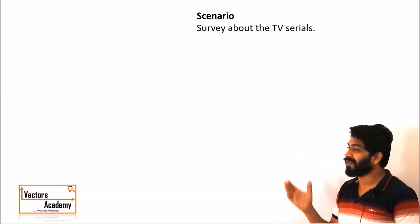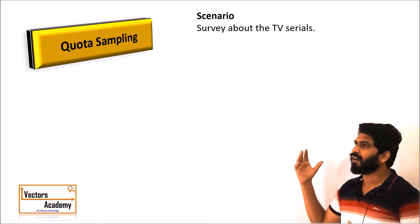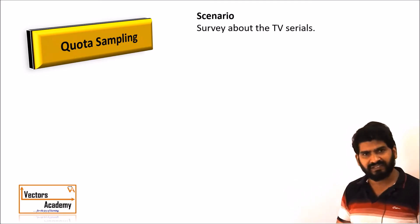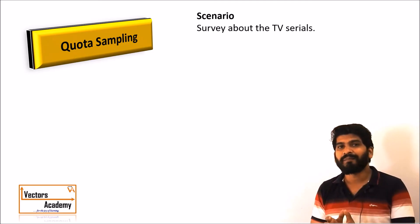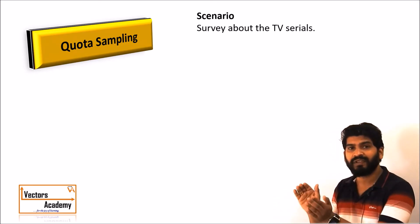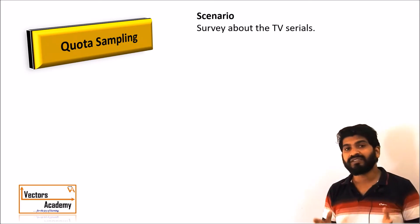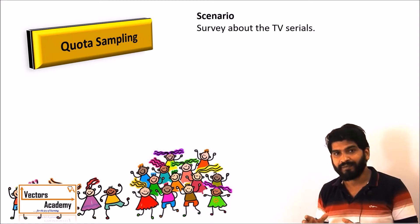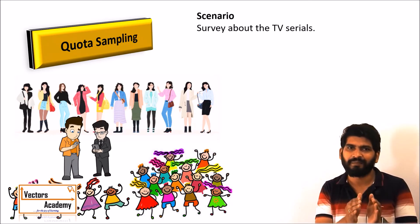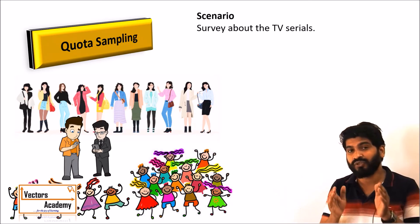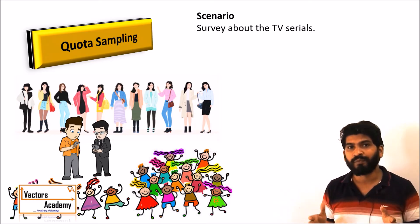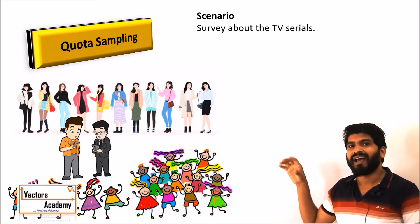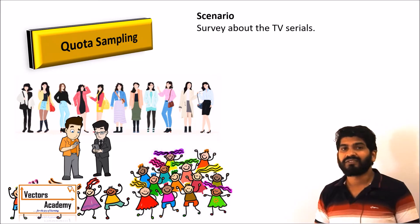The next type is quota sampling, which is important in scenarios like studying ratings of different TV channels or serials. As the name suggests, we assign a specific quota to specific types of population. For TV serials, the majority of the relevant population is women and children, with fewer men. So the sample should contain around 85 percent women and children and 15 percent men. This proportional allocation is called quota sampling.